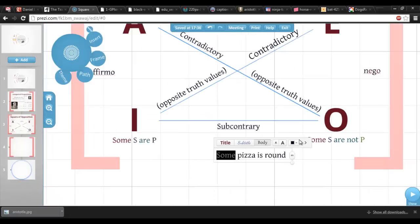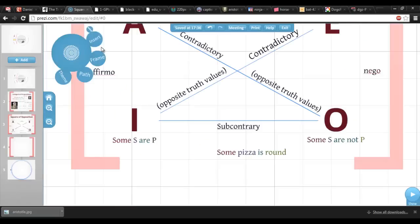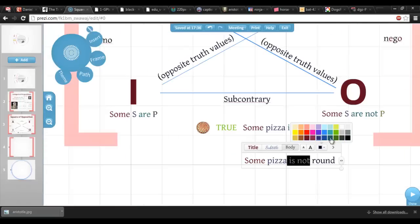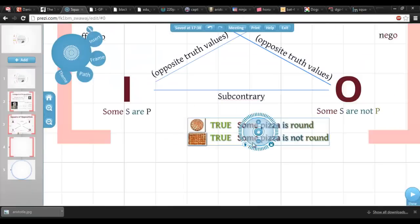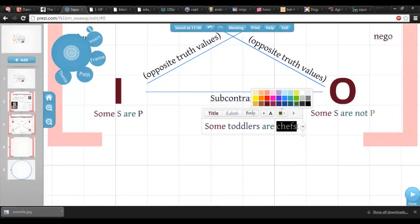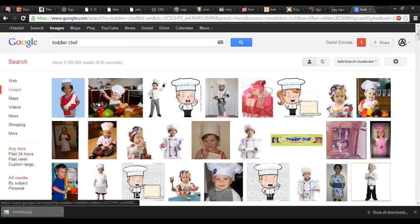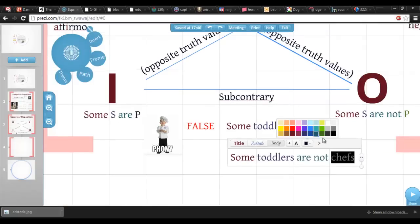The two particular propositions bear a similar relation called subcontrary. It's possible that both I and O sentences are true at the same time, so again they're not contradictions. But it can never be the case that they're both false. So if you know one is false, you immediately know the other must be true.